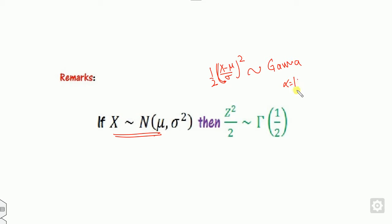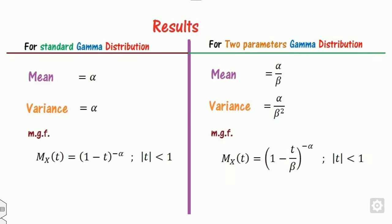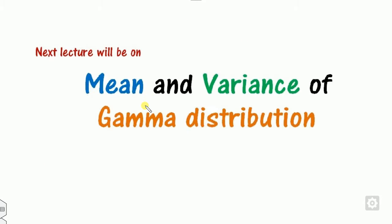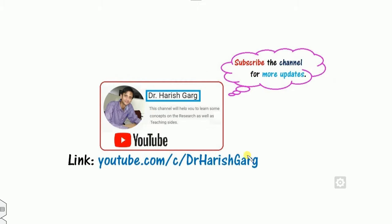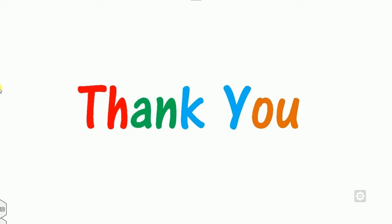We conclude that if x follows the normal distribution, then z squared over 2 — or equivalently, z squared — follows a gamma distribution with parameter alpha equal to one-half. We will see how to calculate the mean, variance, and moment generating function of the gamma distribution in the next class. Till then, browse the link for various distribution and probability videos. Best of luck, happy learning!